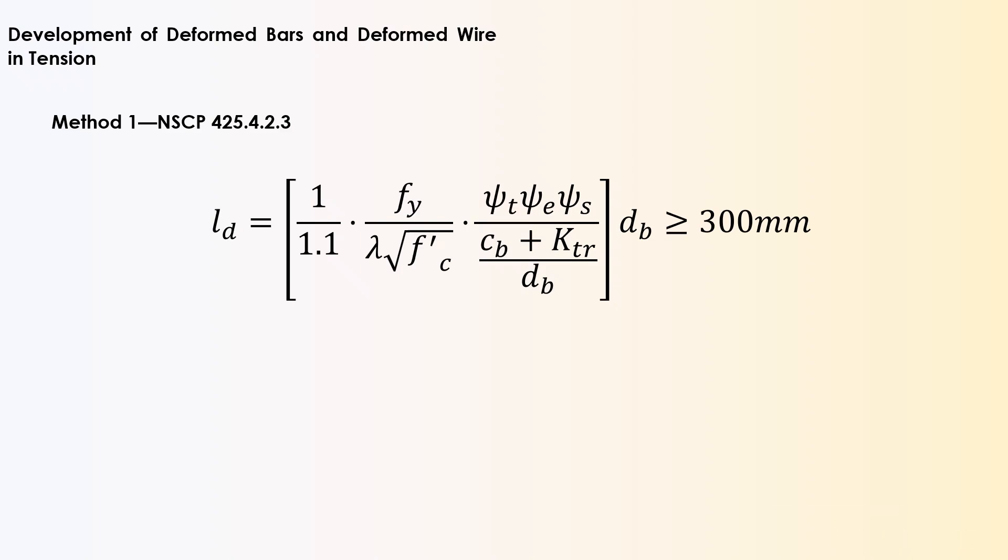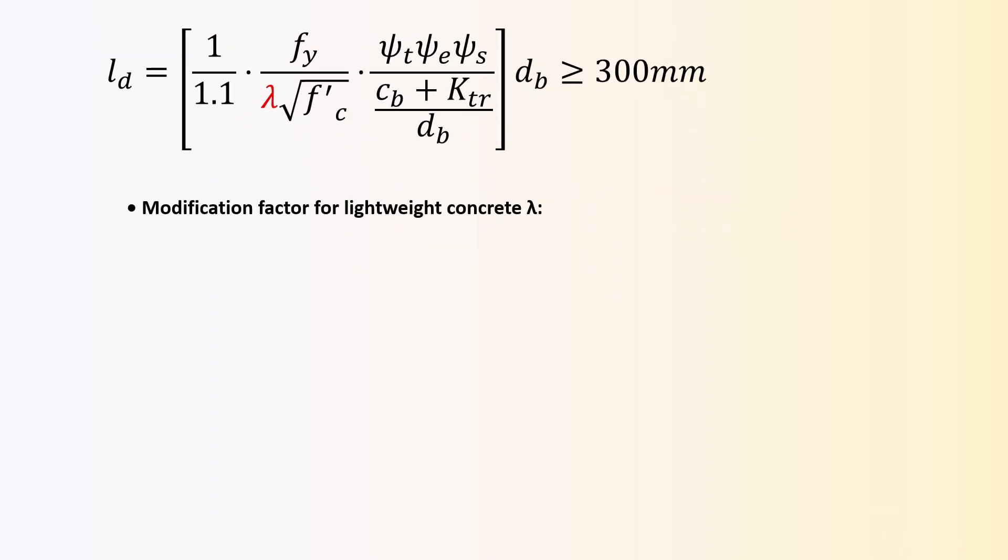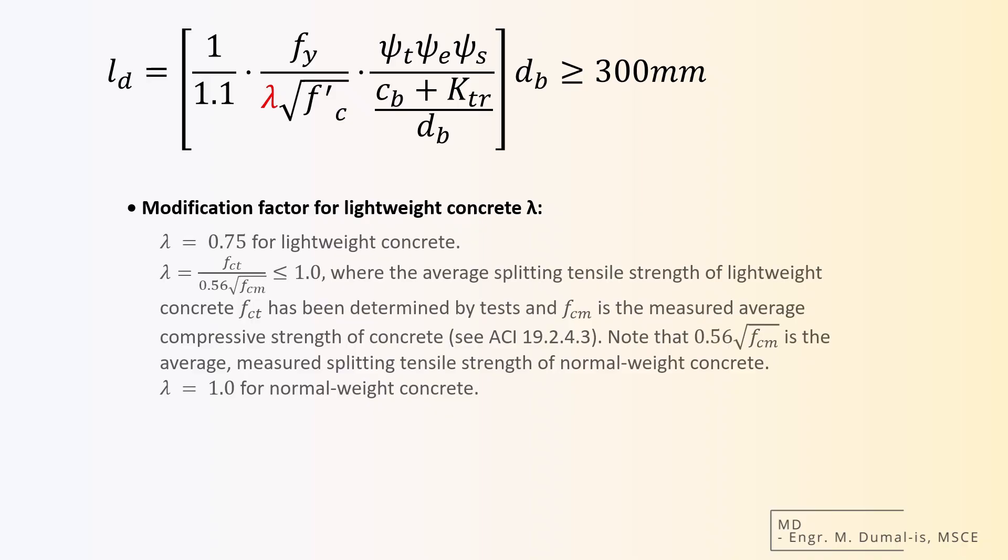Starting with the lambda factor, also known as the modification factor for lightweight, or the lightweight modification factor. This factor reflects the lower tensile strength of lightweight aggregate concrete. A lower tensile strength results in a reduction of splitting resistance. To account for this, the code stipulates that the value factor for lightweight concrete is 0.75, or if fct is given, we solve for the value of lambda. And for normal weight, the value of lambda is 1.